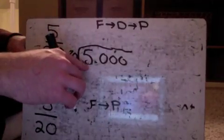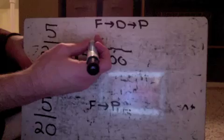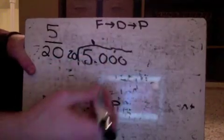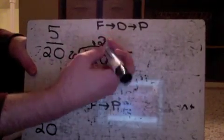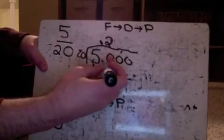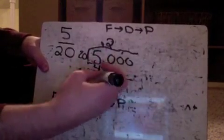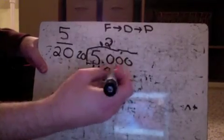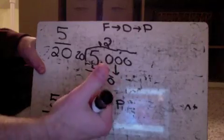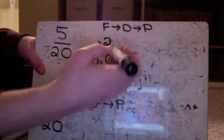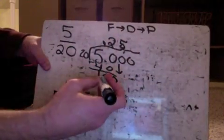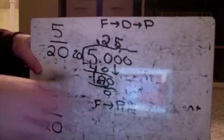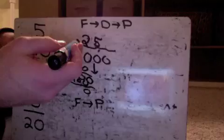20 does not go into 5, I'll just put my decimal point straight up here. 20 goes into 50 twice. So my 2 goes here, 2 times 20 is 40, we'll subtract and we'll get 10. Now I'll bring down my zero. 20 goes into 100 five times. 5 times 20 is 100, I've got nothing left over, this is a terminating decimal. Now I've got it as a decimal.